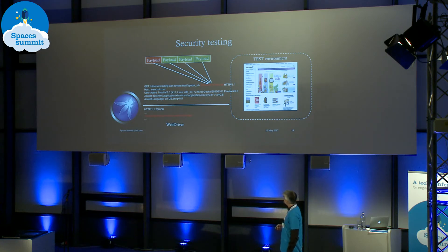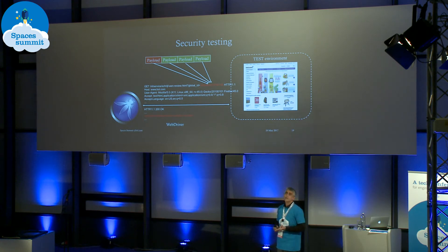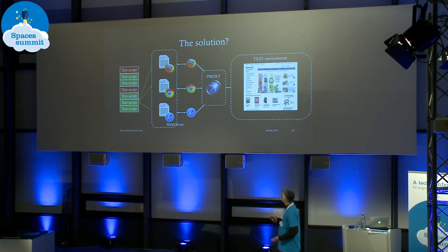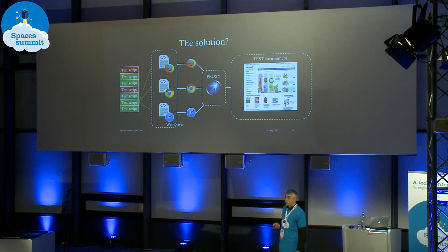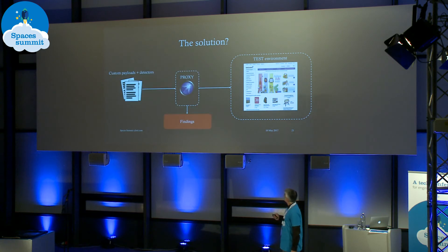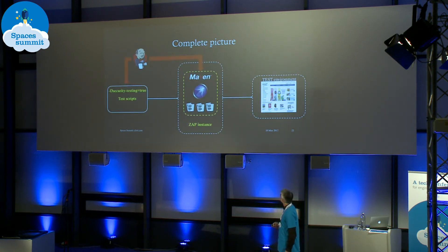But these tools have their limitations. First: how do they know where to send the requests? Second: how do they know how to find the vulnerabilities? Well, for the first thing, we can reroute the functional tests through our web scanner, allowing the scanner to collect all the URLs. For the second thing, we can help it by creating custom payloads and custom detectors, and that way help it find vulnerabilities.